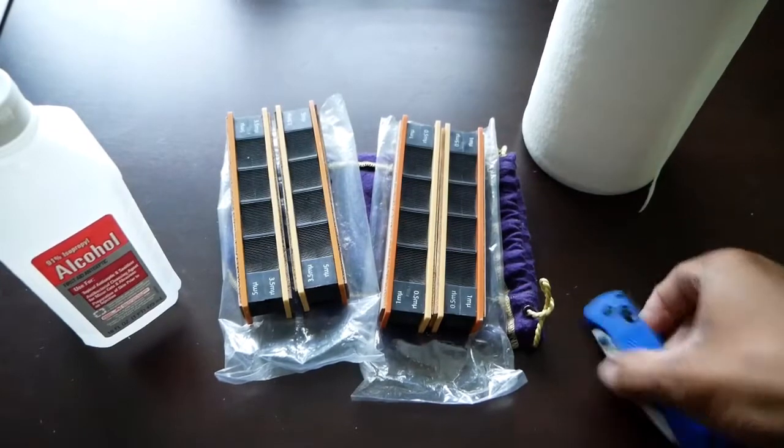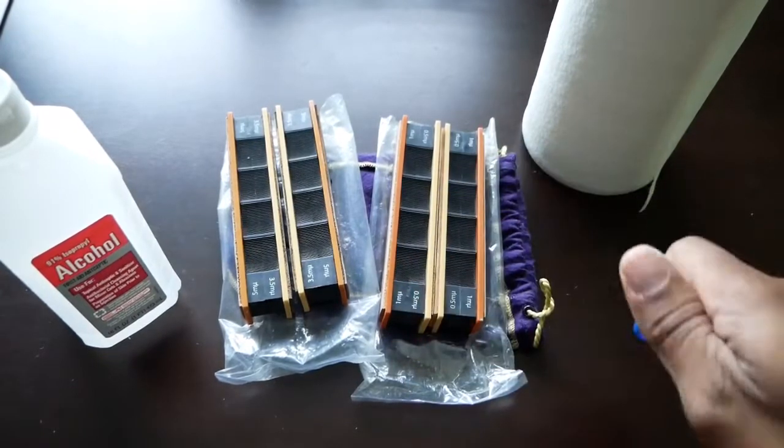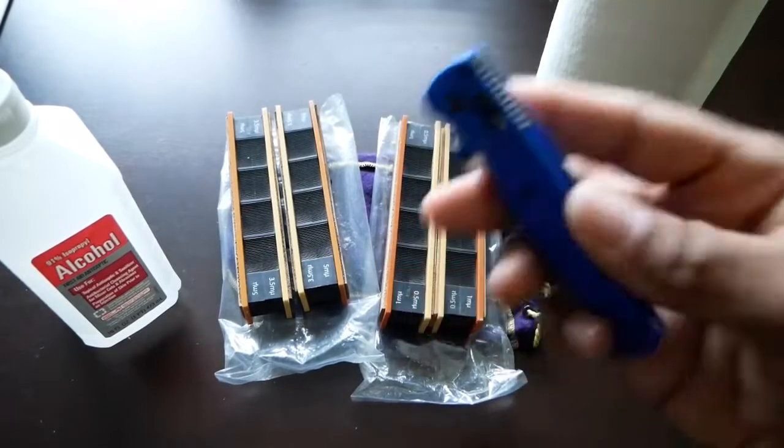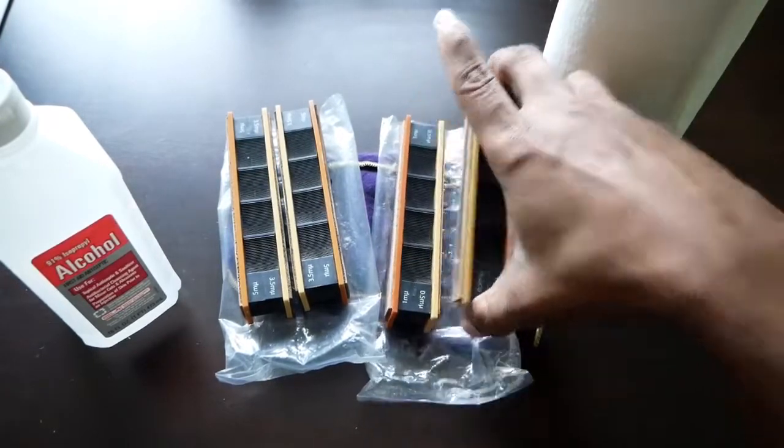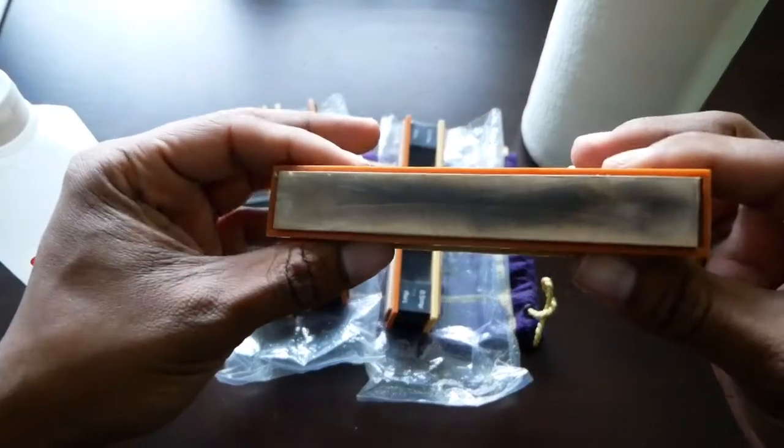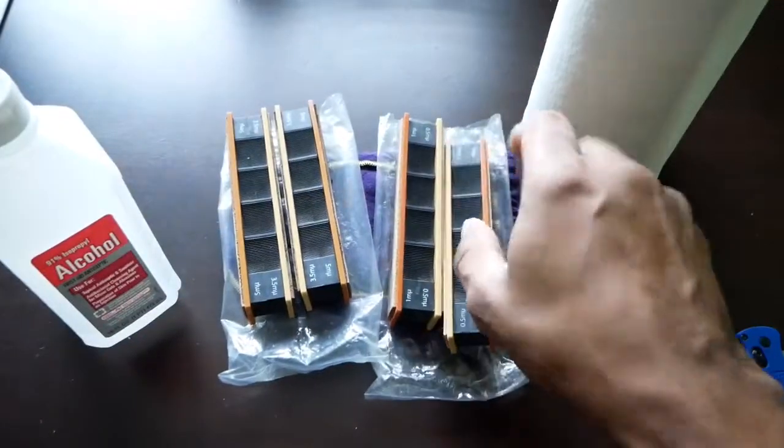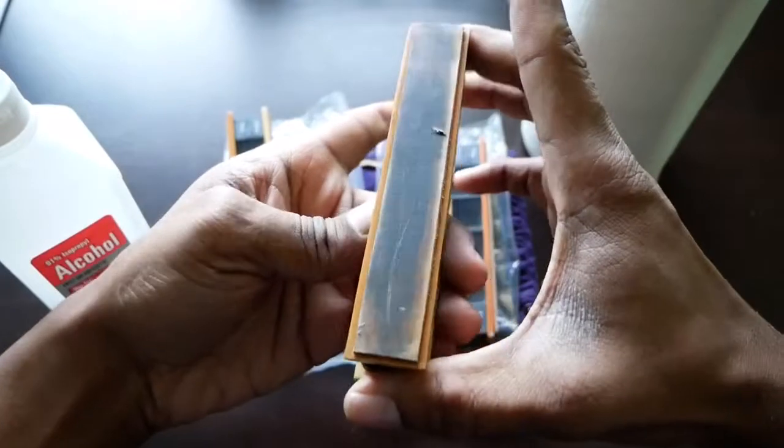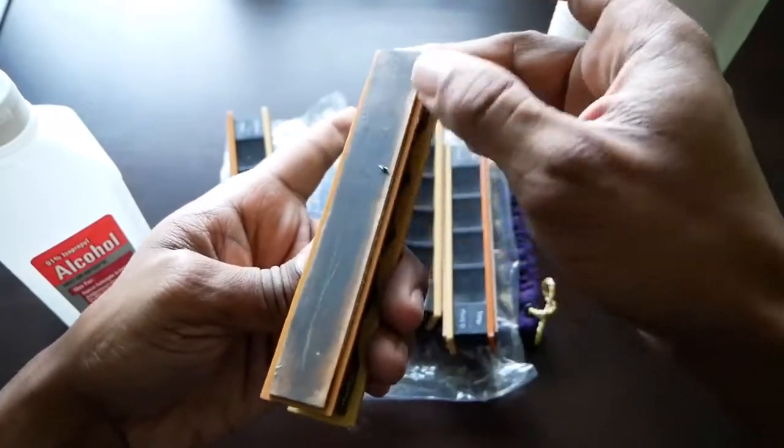Alright, I'm really enjoying my Benchmade Bug Out, so I want to put a new edge on here. But these strops are pretty dirty. I've used these strops probably way too long before cleaning them. I couldn't tell you the last time I cleaned them, so I figured I'd take a second and show you how I clean my strops off.